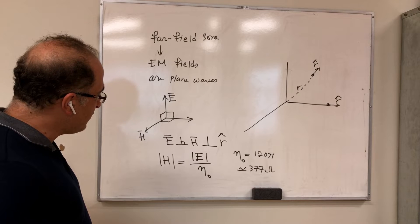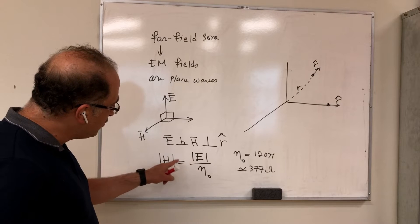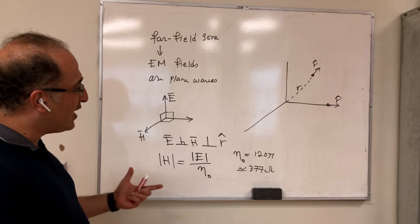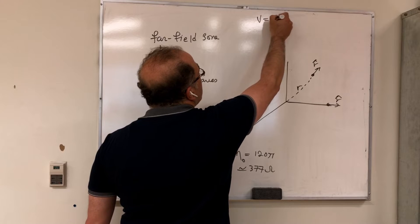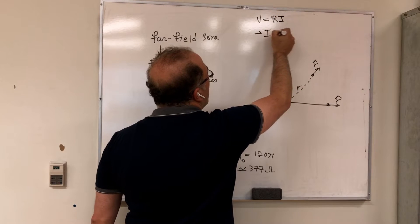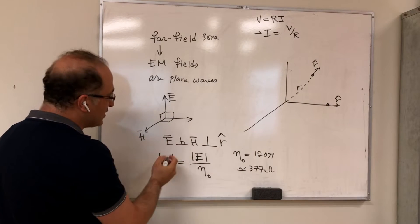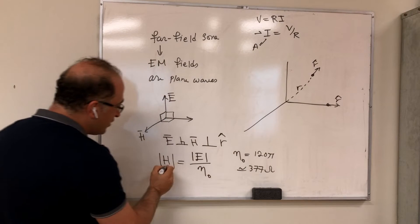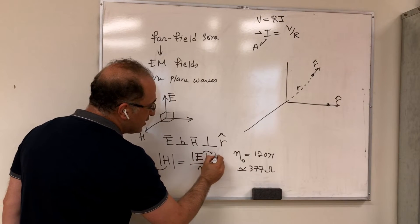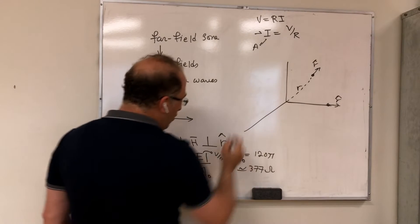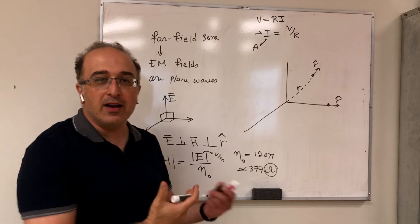So the magnitude of H is directly related to the magnitude of E. I want you to notice that this is very similar to the equation in circuits when we say V = RI, or I = V/R. Remember that H by nature has the similar dimension as I — I in terms of dimension is amps, this is amps per meter. V is volts, electric field is volts per meter. And R is ohms and η₀ is also ohms. So this is essentially our V = RI in free space.